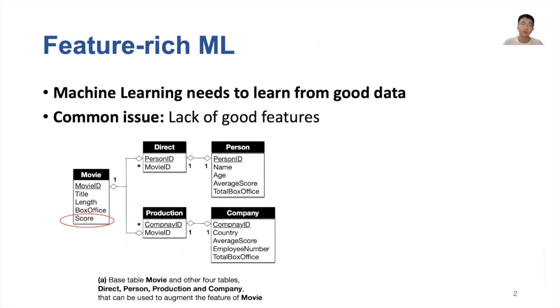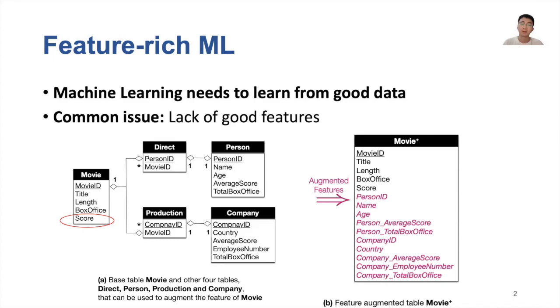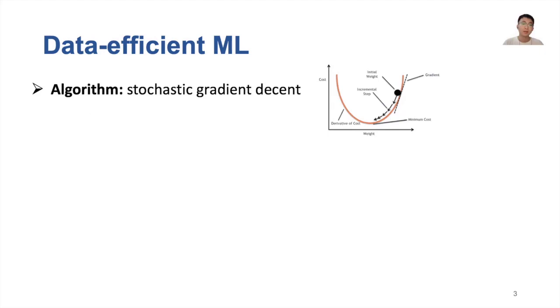Fortunately, we can augment the features of movie with other four tables. The feature-rich table with new features augmented through joins, denoted by movie plus, as shown in the right figure. With feature-rich machine learning, the trained model can achieve better accuracy.